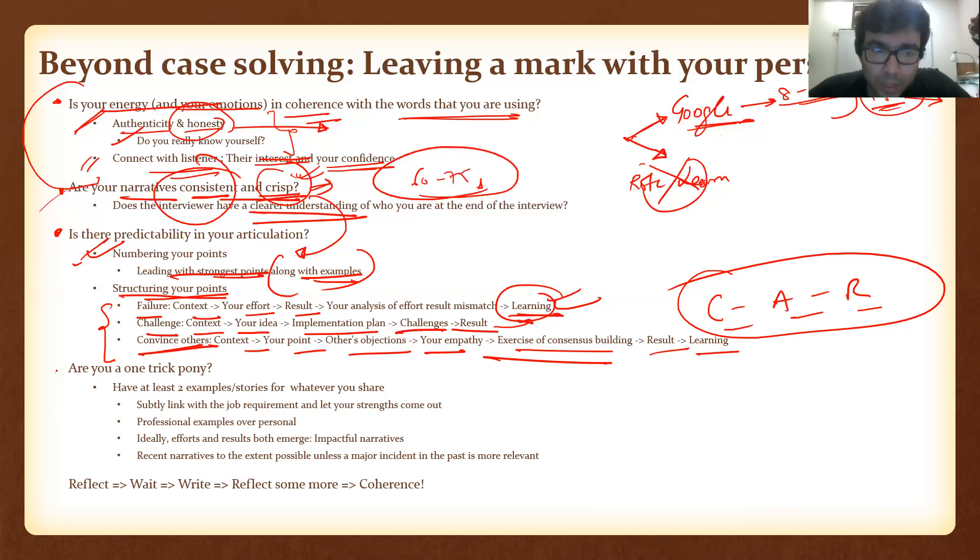The fourth point is, are you a one-trick pony? Have at least two examples or stories or whatever you share. I cannot say that hard work is my strength and just have one story for that or one narrative. Really my strengths, weaknesses, all of those things flow from a lifelong learning journey. So whatever is the question, have at least two stories. And this will go back to the point of why I was saying starting early, because this is some effort, right?